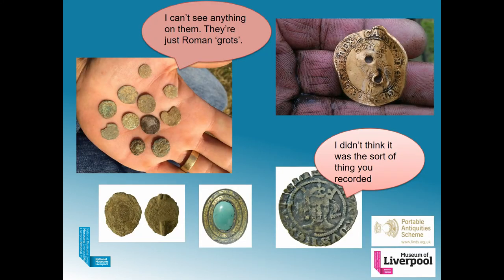FLOs often say to finders they want to see everything discovered, but more often than not the finder will bring a selection. Due to the dispersal of FLOs, if we were shown everything, many would be cowering under the desk — we could do with a bit more resources. At a detecting club, a finder will usually bring what they happen to have in their pocket, whereas when finders come to a find surgery at a museum, they're more likely to come prepared with a list of grid references and a wider variety of finds.